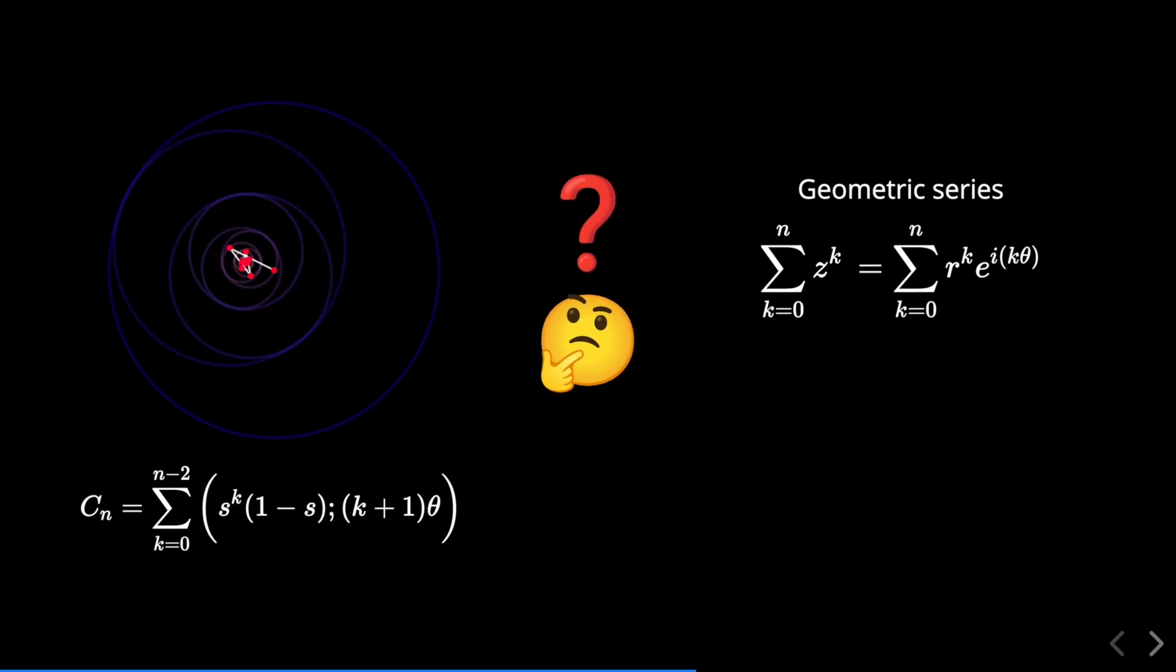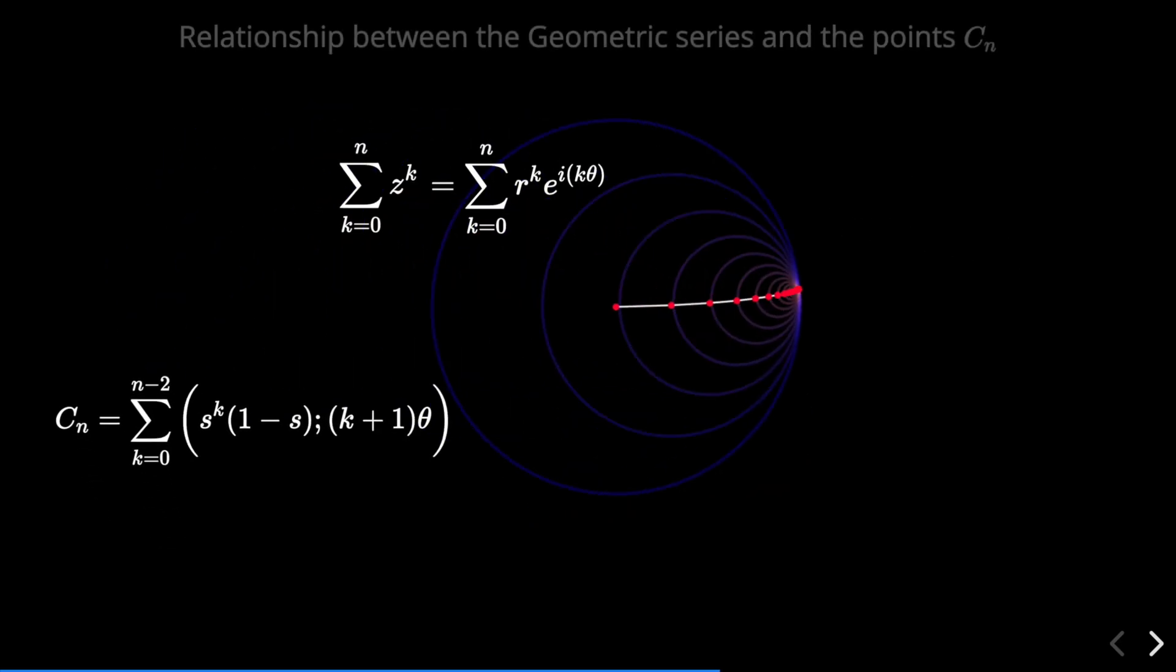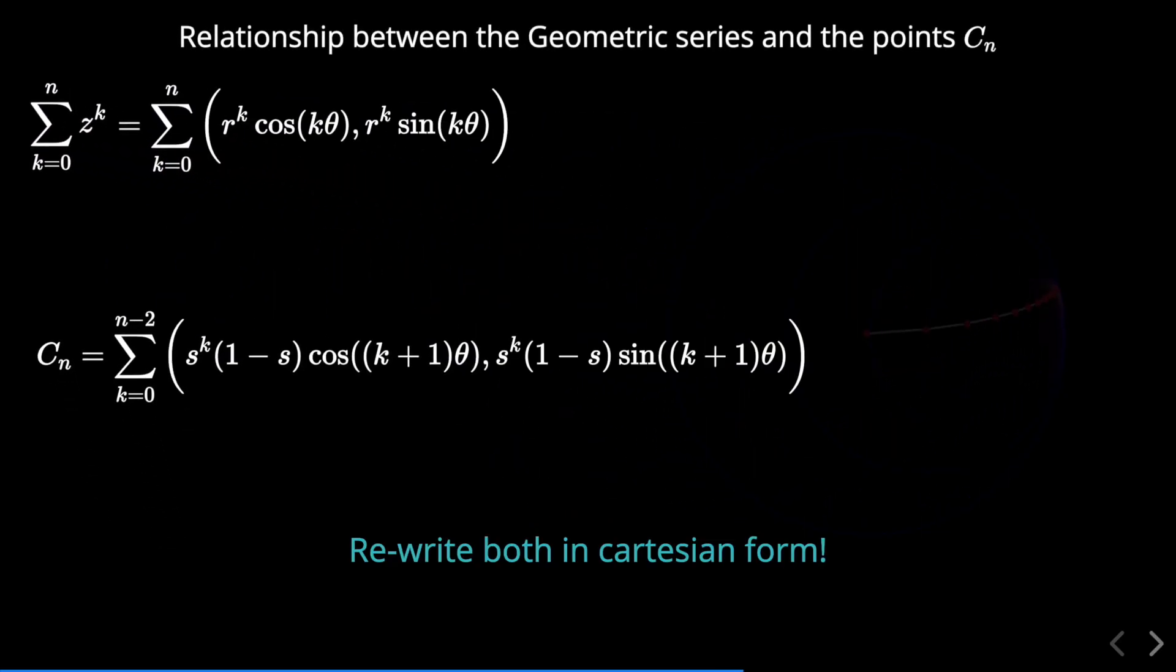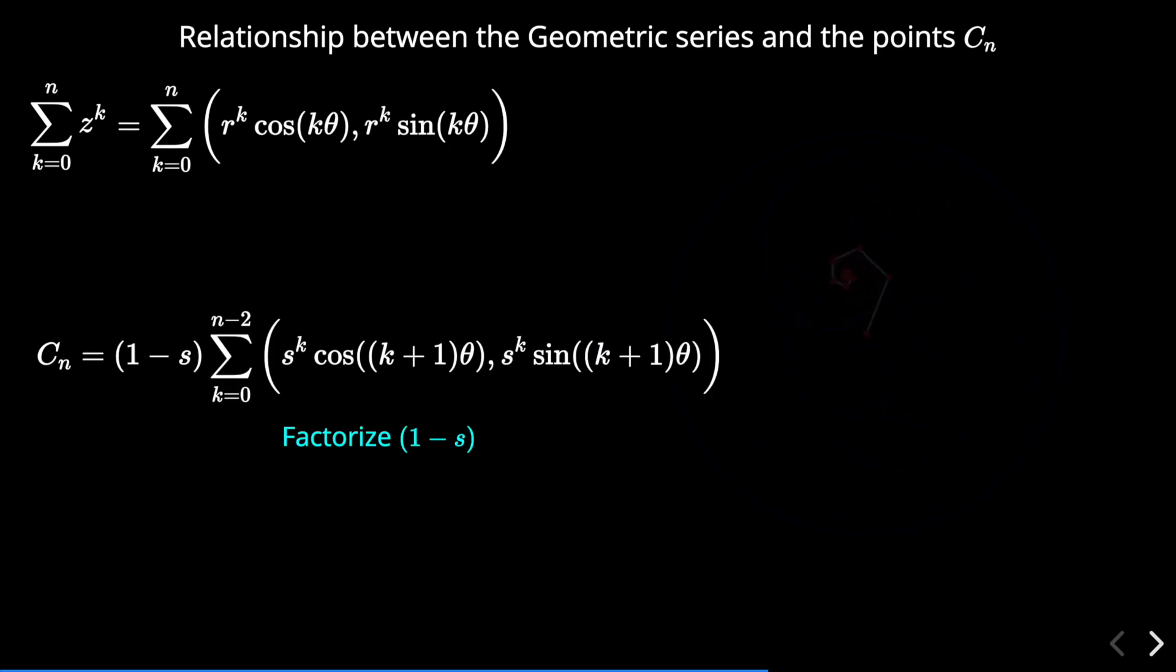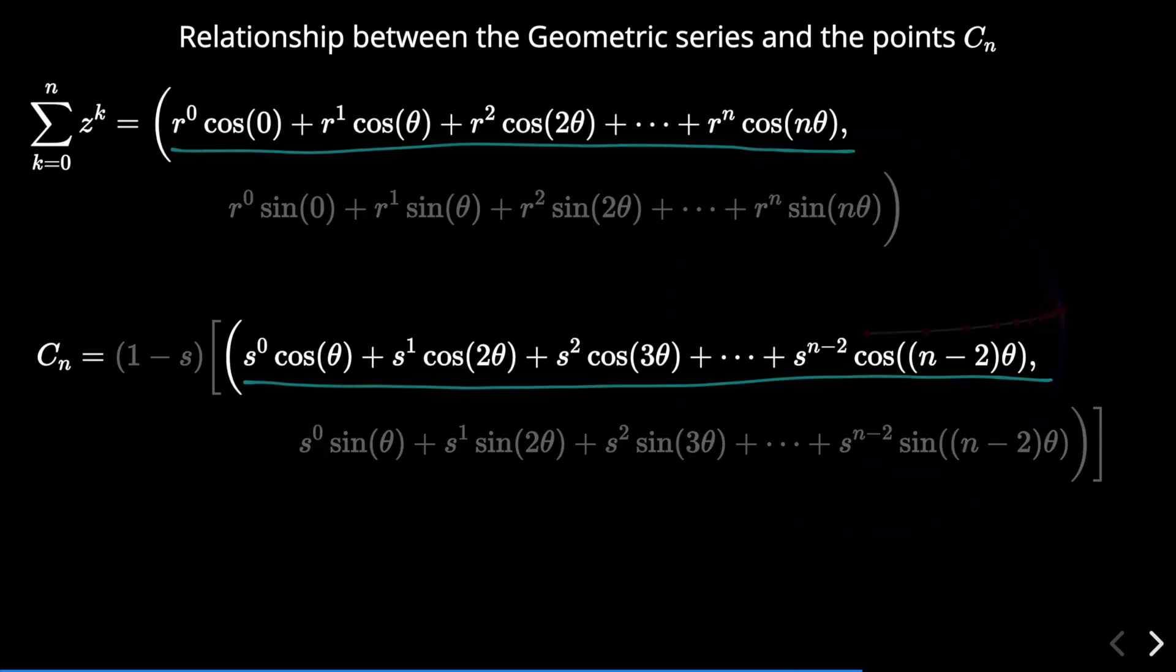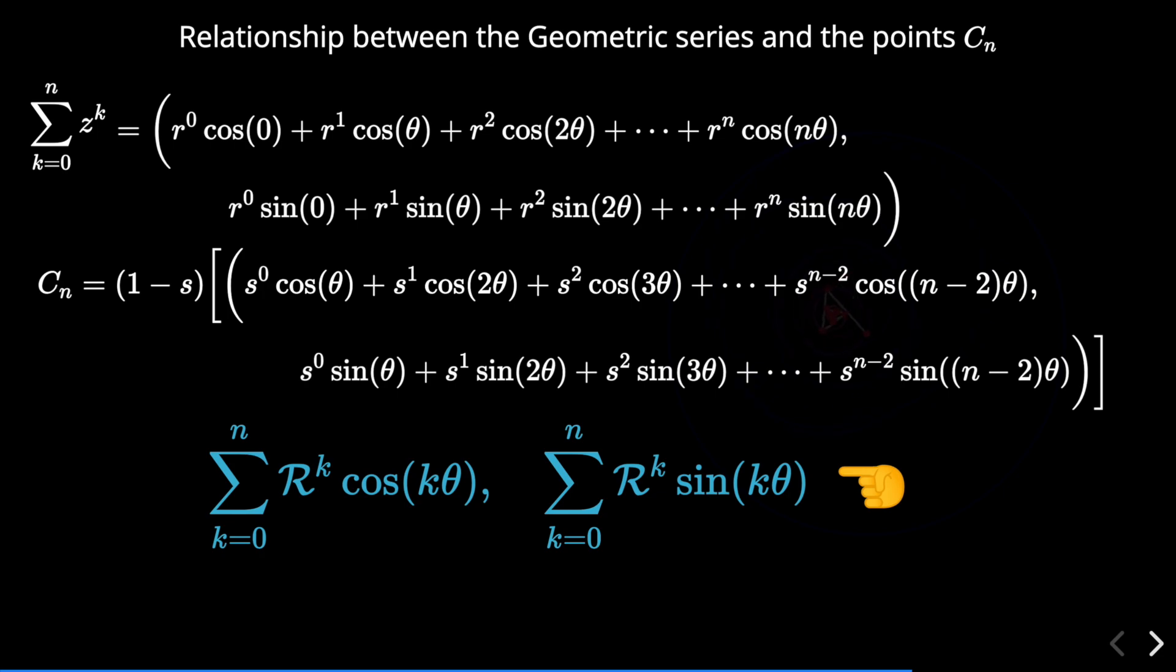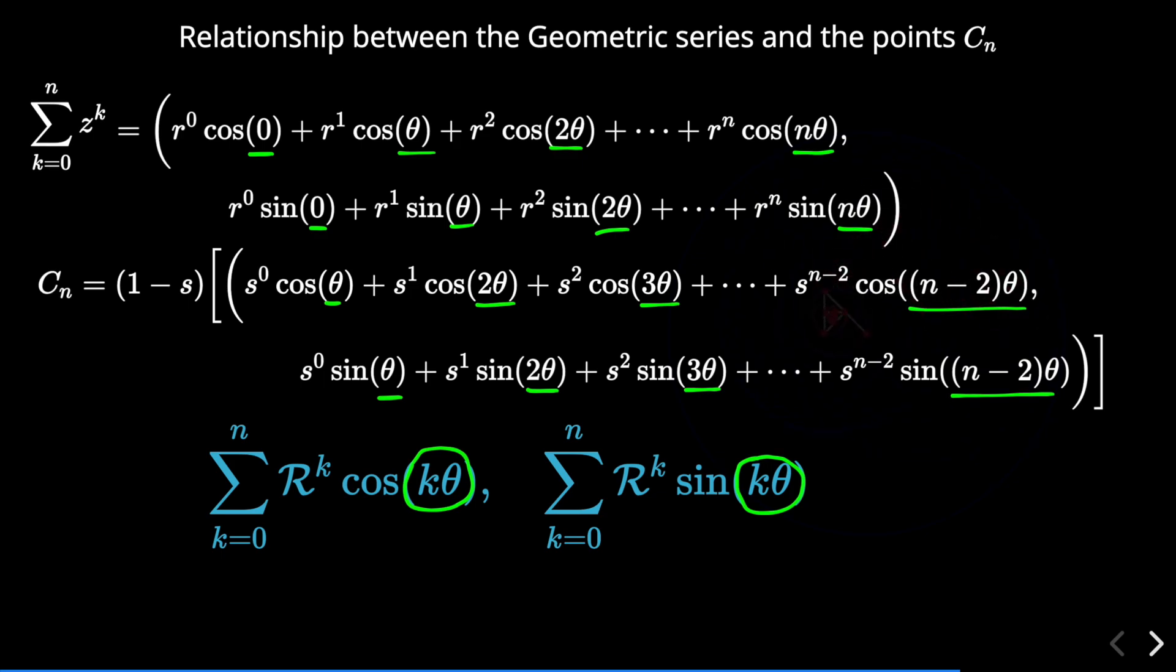So you might be wondering how exactly are the points C and N related to the geometric series. In order to see the connection between these two expressions, let's rewrite them both in cartesian form. In the expression for the points also notice that we have the factor 1 minus S, so we can factorize it. We also expand the sums in each expression. If we focus our attention on the corresponding components of each expression, we notice that both components are essentially weighted cosine and sine series, where the weight for each term is given by the power of a constant, and the angle K times theta increases linearly with the value of K.